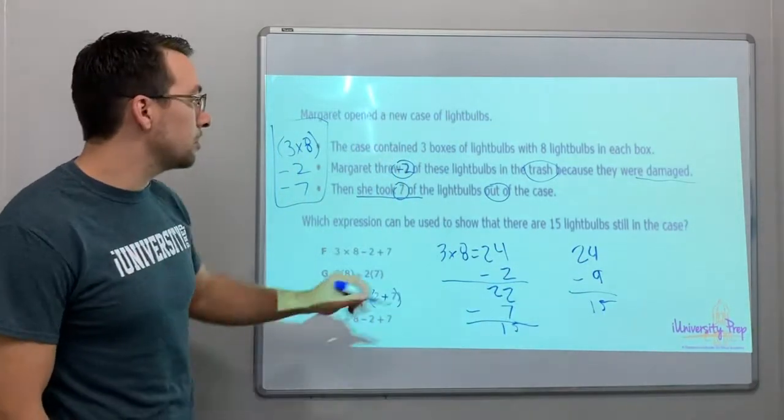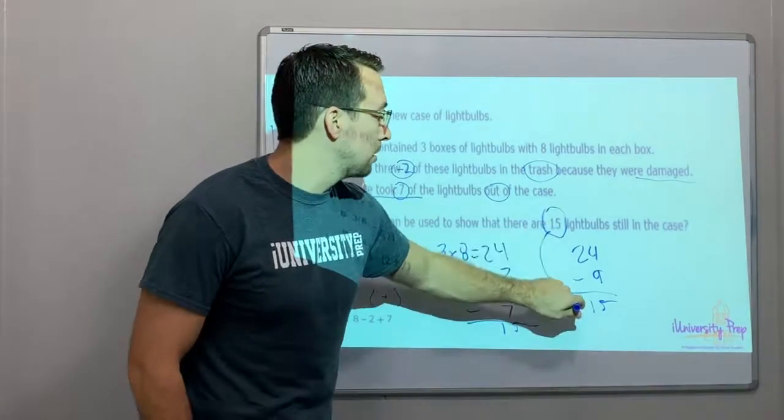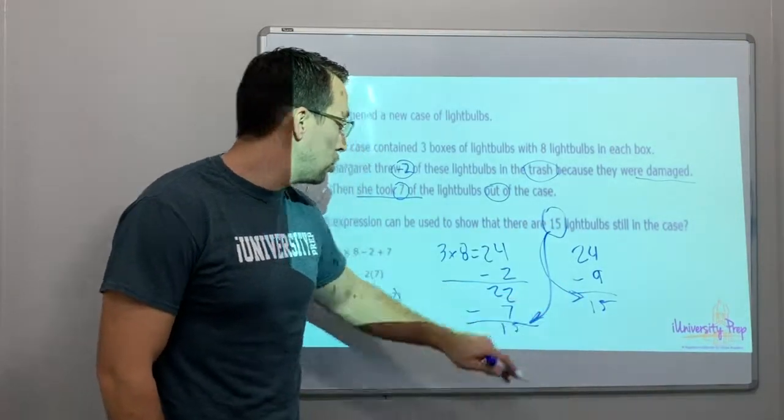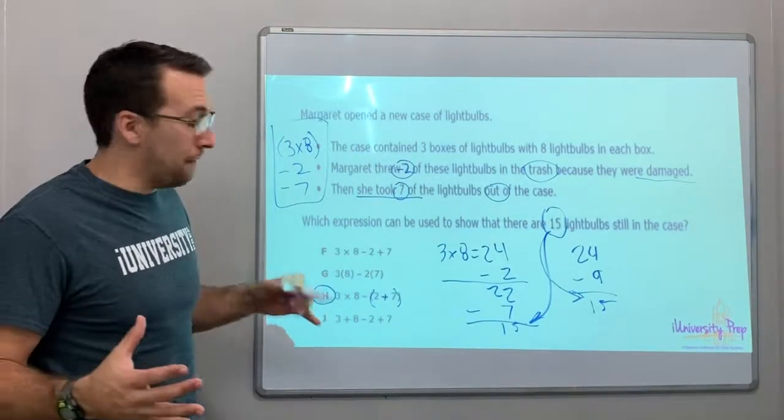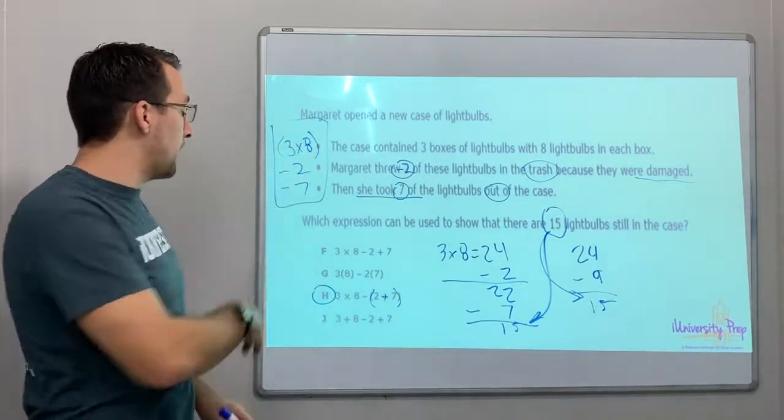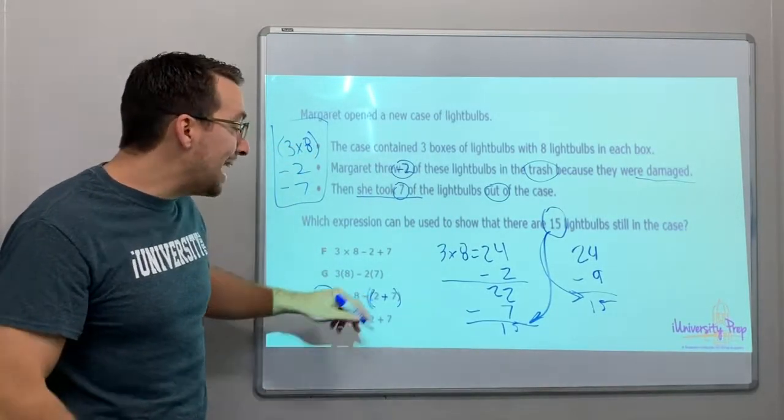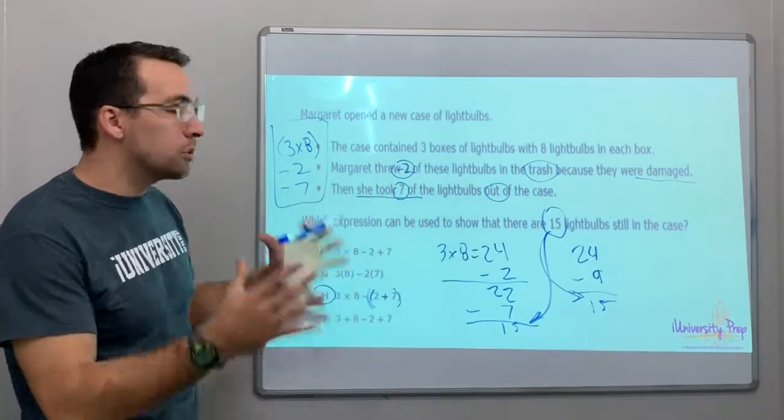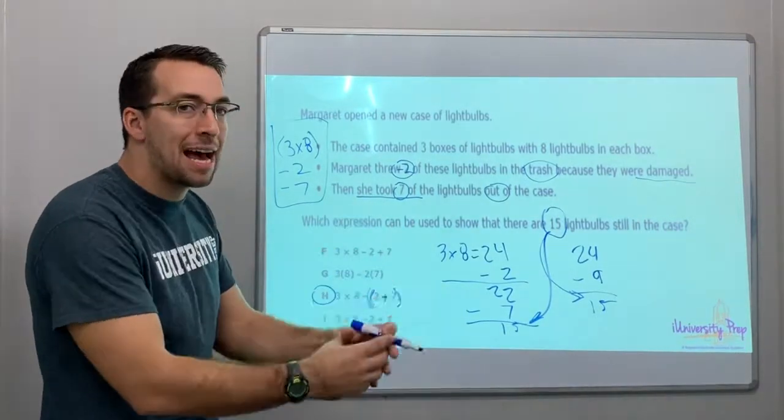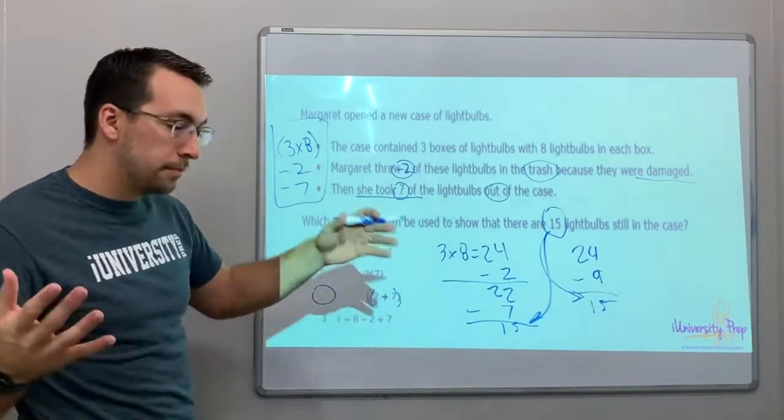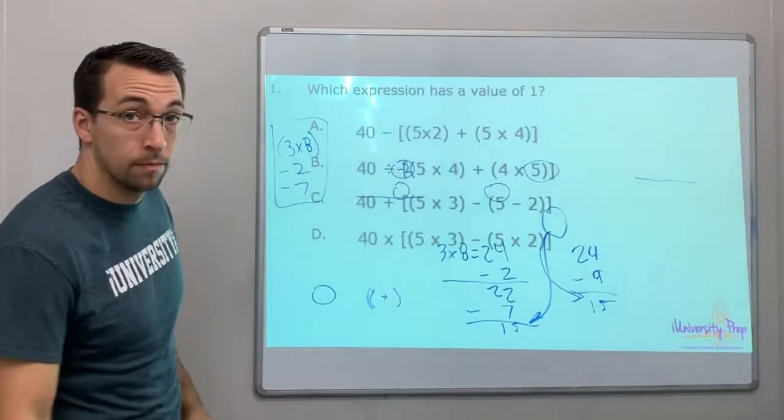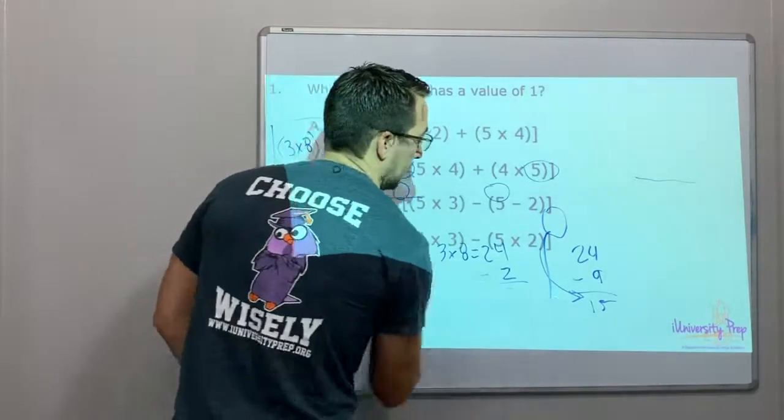That's our answer - the answer is 15 lightbulbs. So that's what we have to do: 3 times 8, we know that, and then minus 2 and minus 7. Oh, so it's minus 2 plus 7 - that's 9. That's our answer. Okay, next problem.